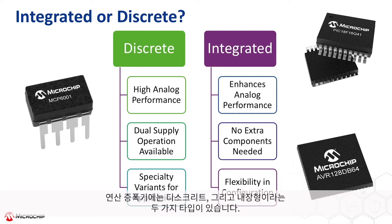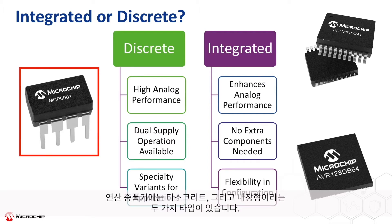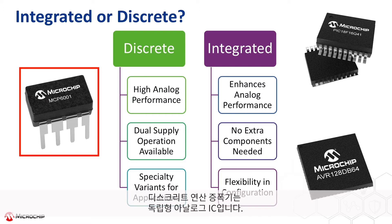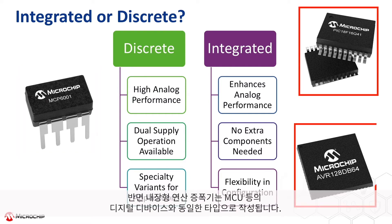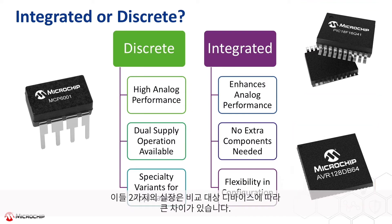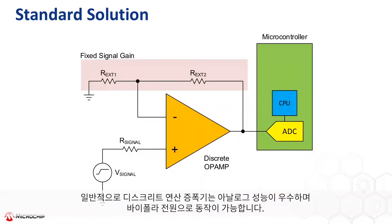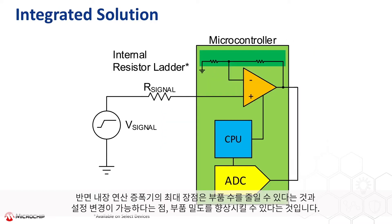In terms of op-amps, there are two different types: discrete and integrated. A discrete op-amp is a dedicated analog integrated circuit, whereas the integrated op-amp is created on the same die as a digital device — in this case, a microcontroller. Generally speaking, discrete op-amps have better analog performance and can have the ability to run on bipolar power, whereas the biggest benefits to the integrated op-amp are the reduction in the number of parts, the flexibility in configuring the op-amp, and the greater power density that can be achieved.